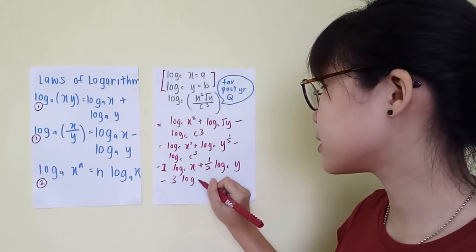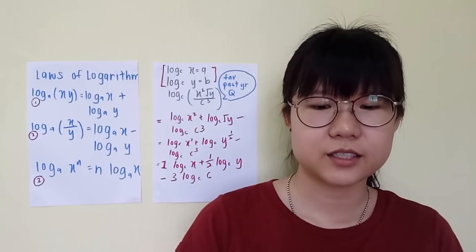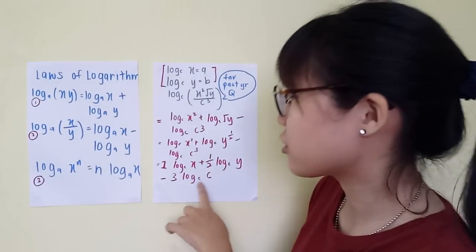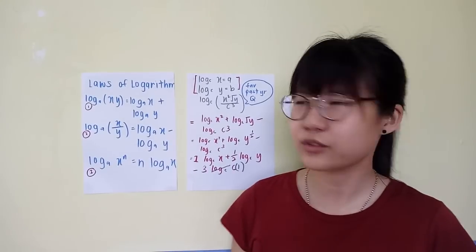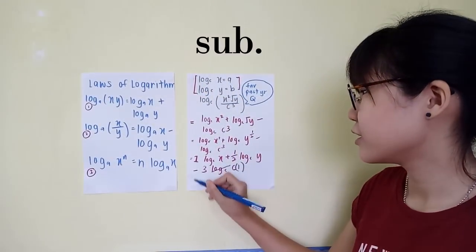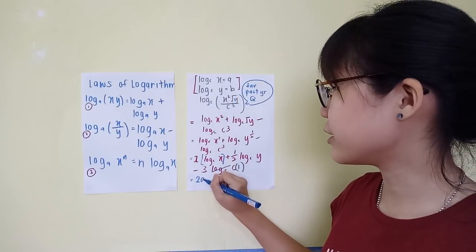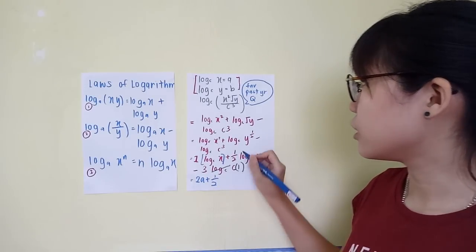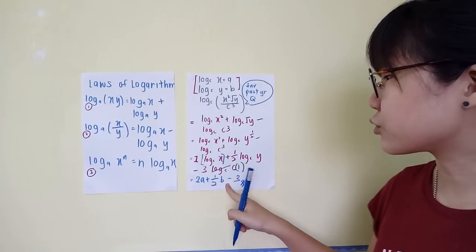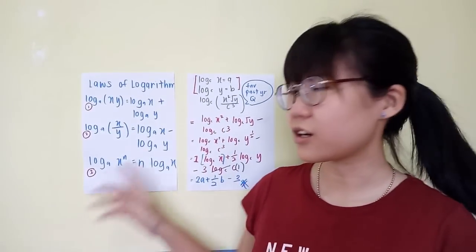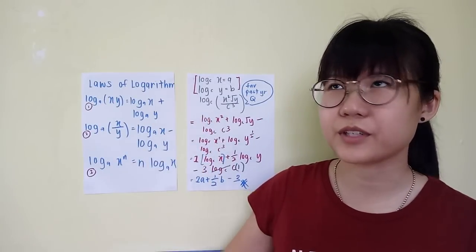Remember what I said about the important things to remember for logarithms? One of them is to cancel log and log when they match, and it becomes 1. So here we have log C and C — you can actually cancel these, so it becomes 1. Now you can refer to the equations they gave you and substitute in. Log C of X equals A, so that's 2A. Log C of Y equals B, so plus 1 over 2 B. And then minus 3 times 1. So the answer is 2A plus 1 over 2 B minus 3.